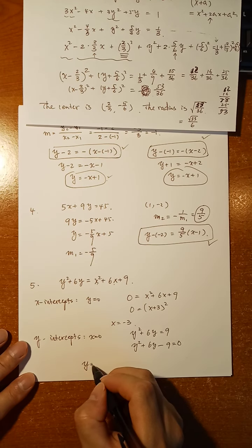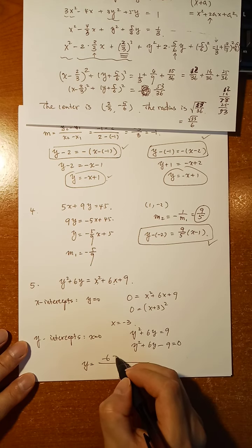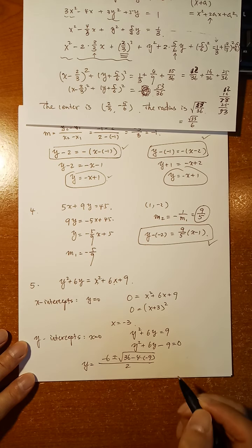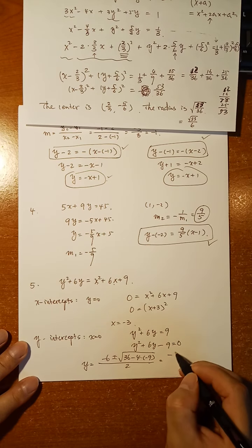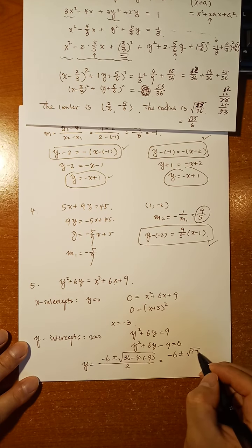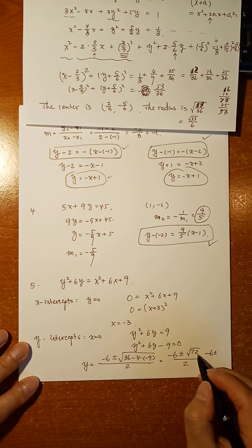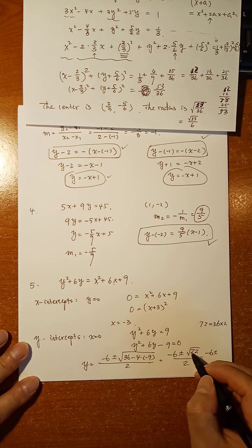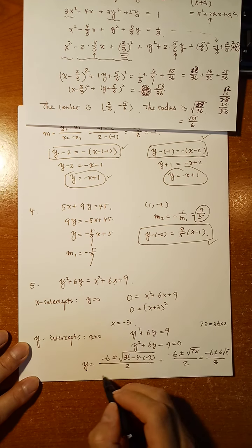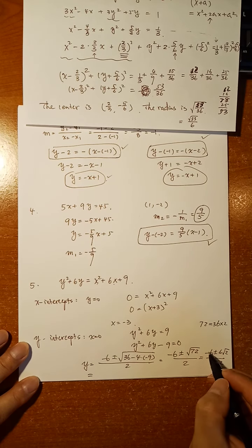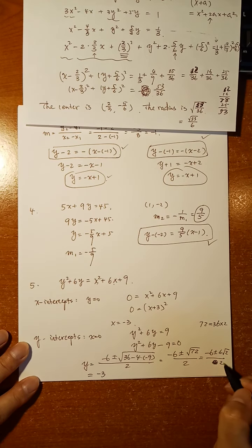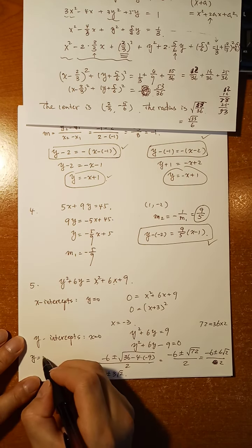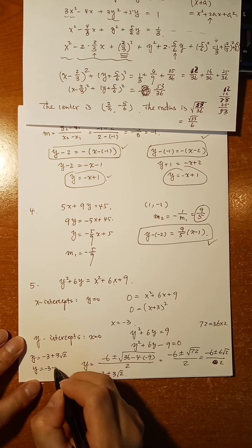This is a quadratic equation, so use the quadratic formula. y equals negative b plus or minus square root of b squared minus 4ac, all over 2a. So it's negative 6 plus or minus square root of 72, over 2. Since 72 equals 36 times 2, the square root of 72 is 6 root 2. Dividing by 2: negative 6 over 2 is negative 3, and 6 over 2 is 3. So the two y-intercepts are y equals negative 3 plus 3 root 2, and y equals negative 3 minus 3 root 2.